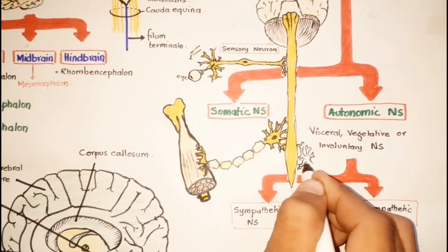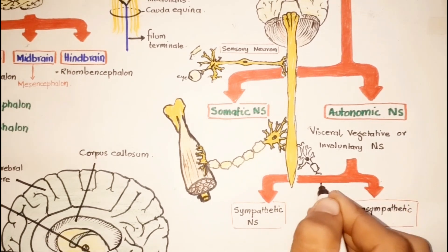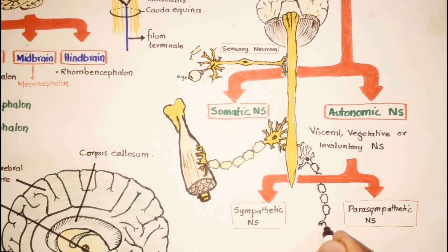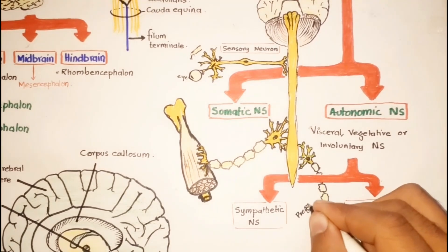The innervation of an organ by both divisions occurs mostly by two nerves. The first nerve that brings information from the CNS and transfers into the second nerve is called the preganglionic nerve and it is myelinated.